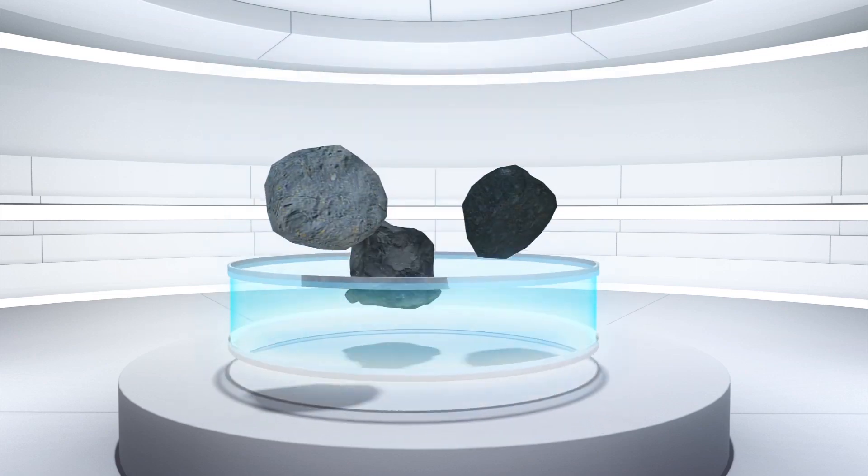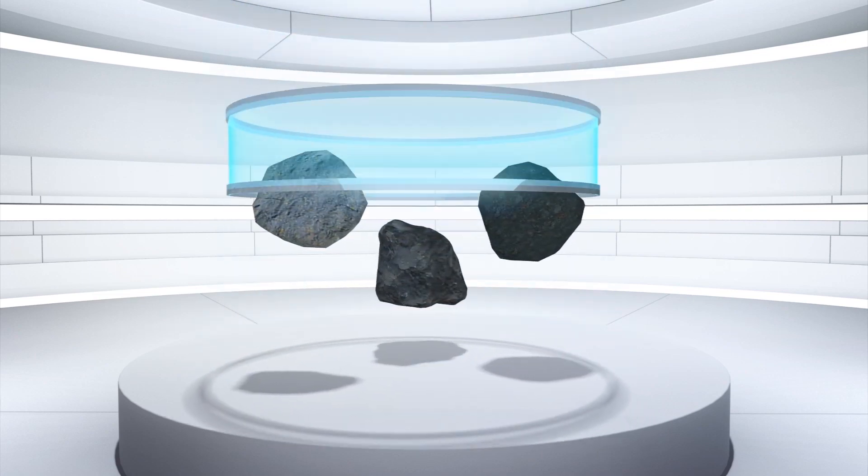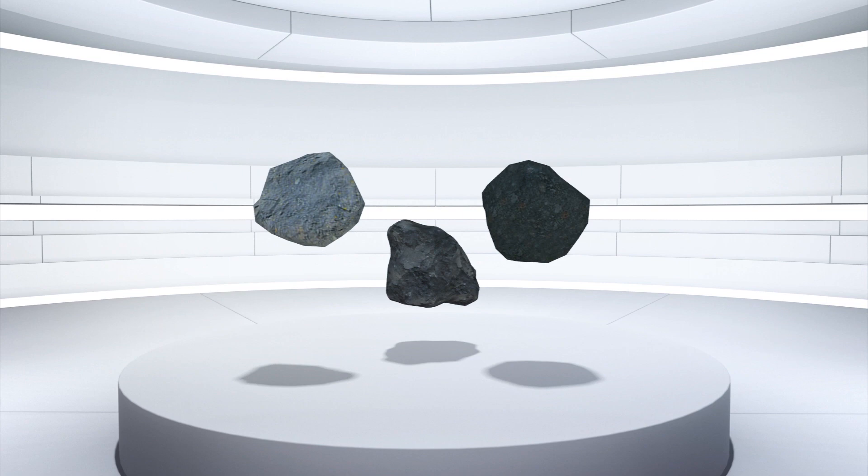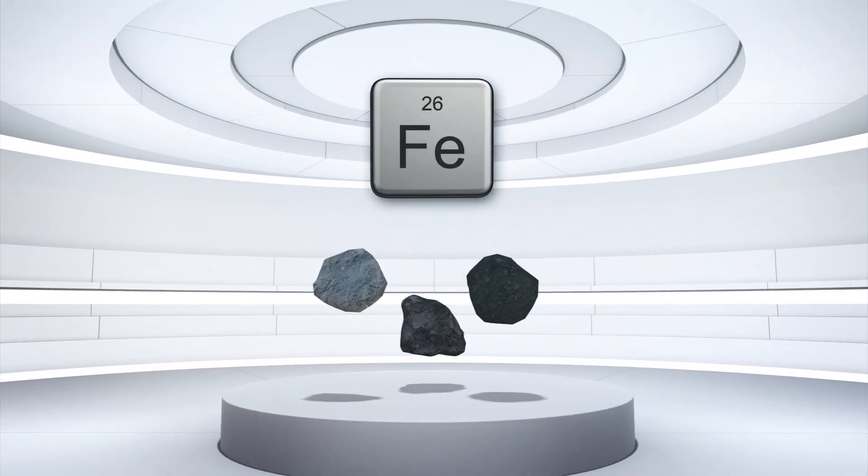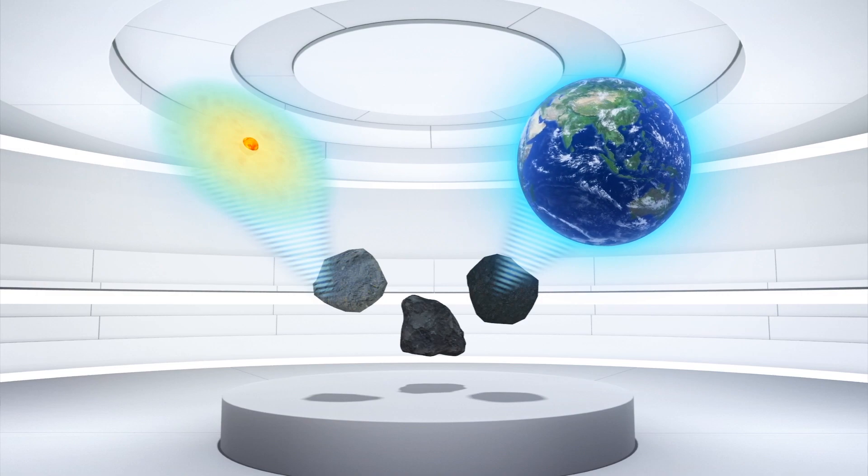According to the study published in Science Advances, the research team found that a type of meteorite known as C.I. chondrites are the closest iron isotope match to our planet and the bulk composition of the solar system itself.